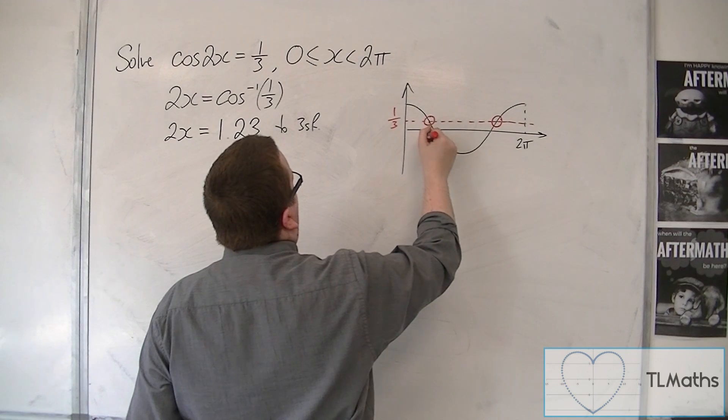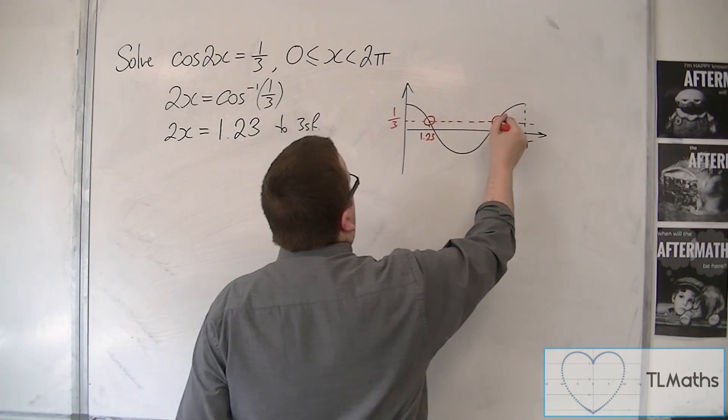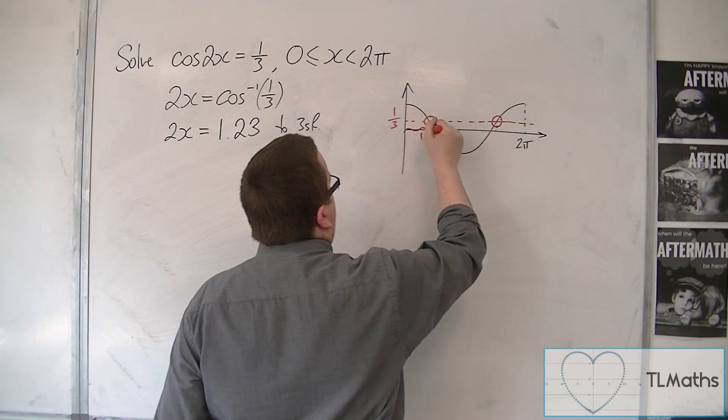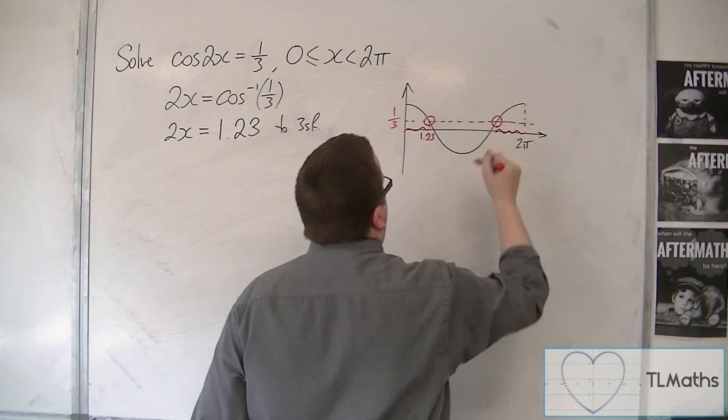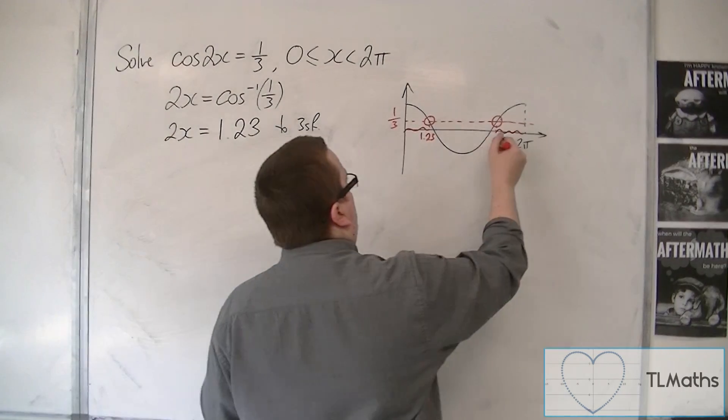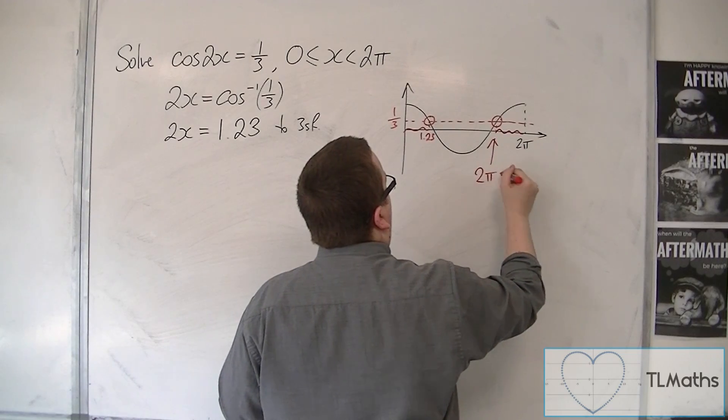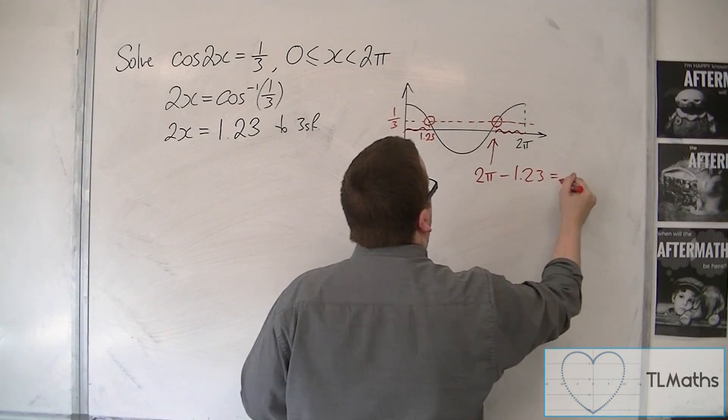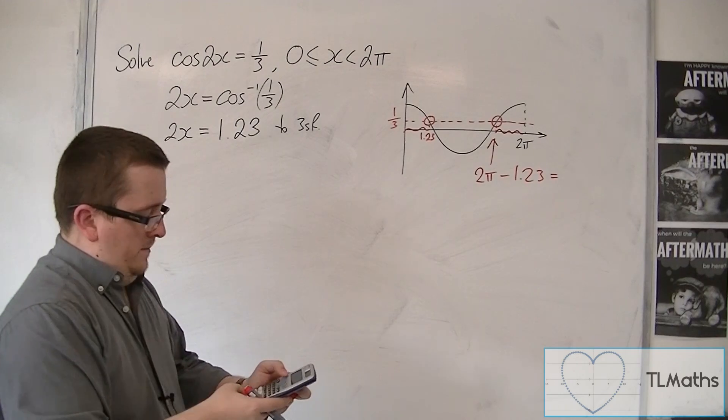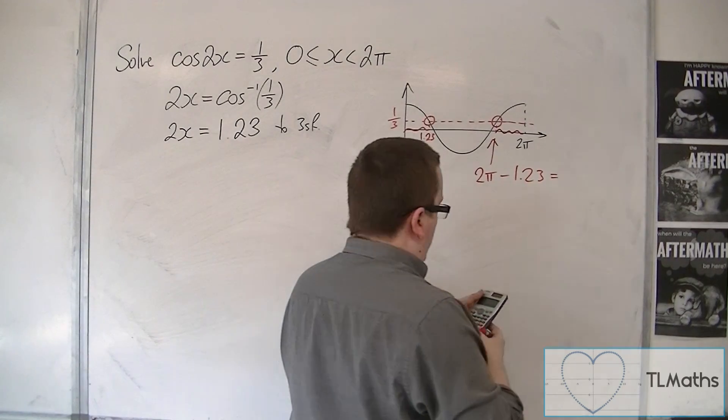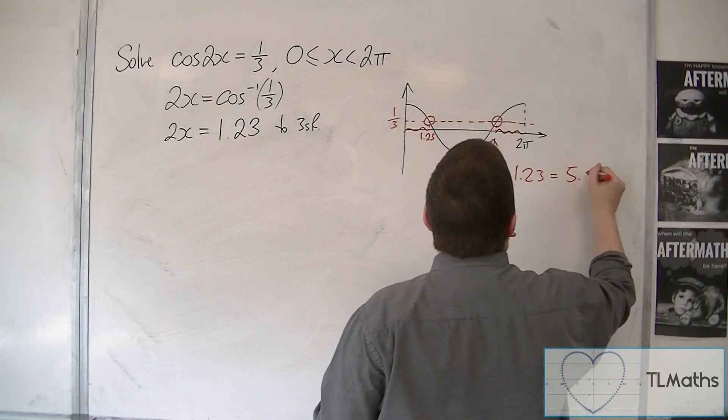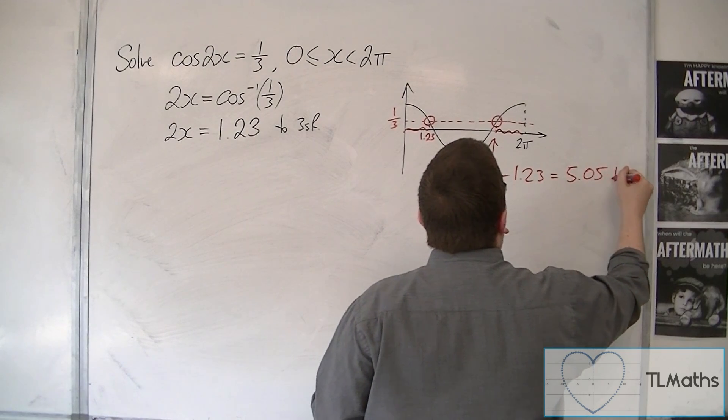This one corresponds to 1.23, and this one, if that distance is 1.23, that distance is 1.23. So I can get 2 pi take away 1.23 to get my second solution, which is 5.05 to 3 significant figures.